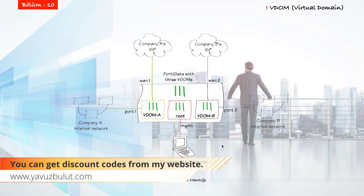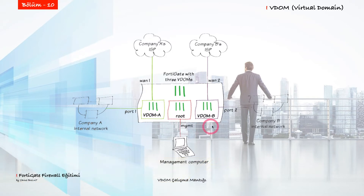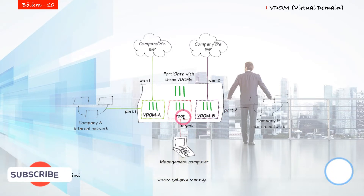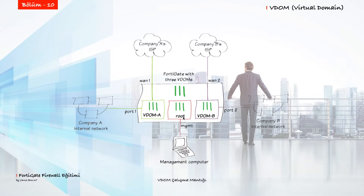VDOM on FortiGate serves to virtualize our firewall. When we enable the VDOM service on our physical device, a root domain is created by default. You can check the datasheet to find out how many virtual domains your device supports. By default, all FortiGate firewalls support 10, but if you need more than 10, you can expand that with a license.